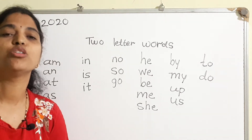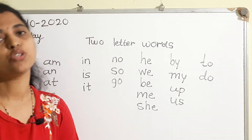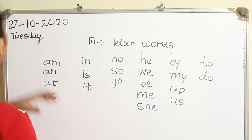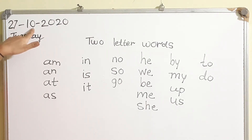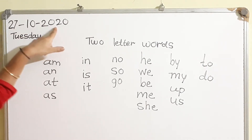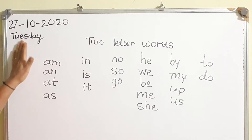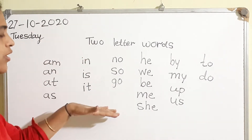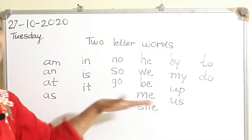Hello kids, good morning everyone! Let's start today's study. Before that, let's check today's date — today is 27th October 2020, and today is Tuesday. Now we are going to see two-letter words.